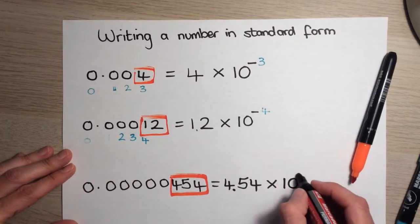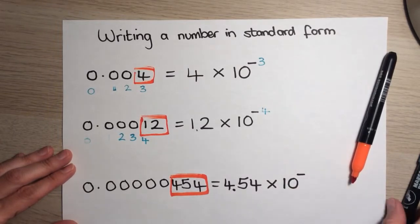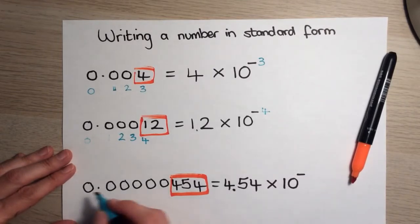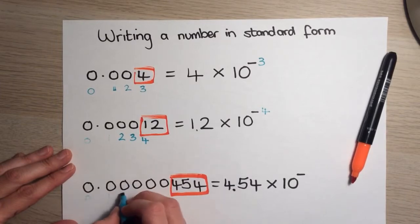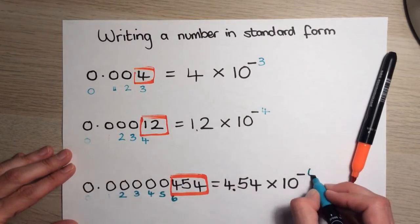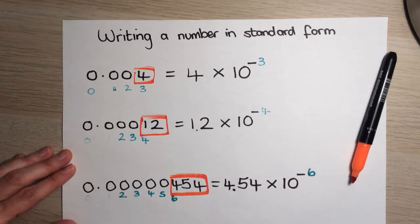And to find the number here, I start counting again. So, 0, 1, 2, 3, 4, 5, 6. And I stop when I get to the first digit that isn't 0. And I put the 6 there.